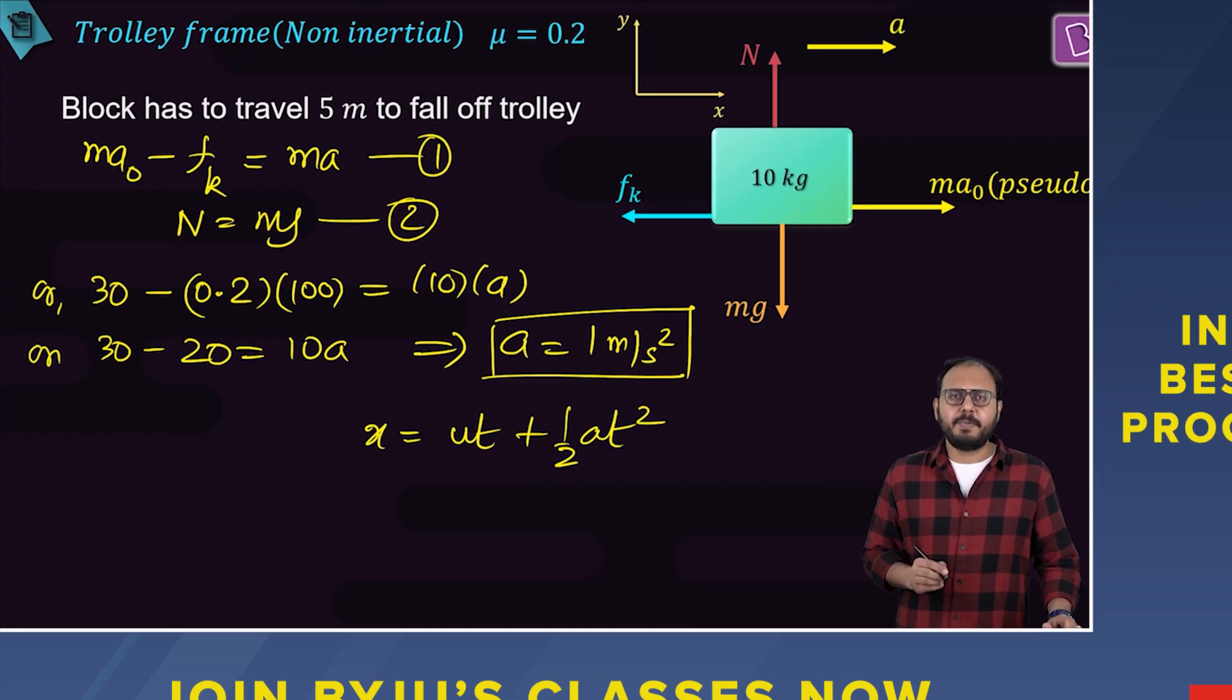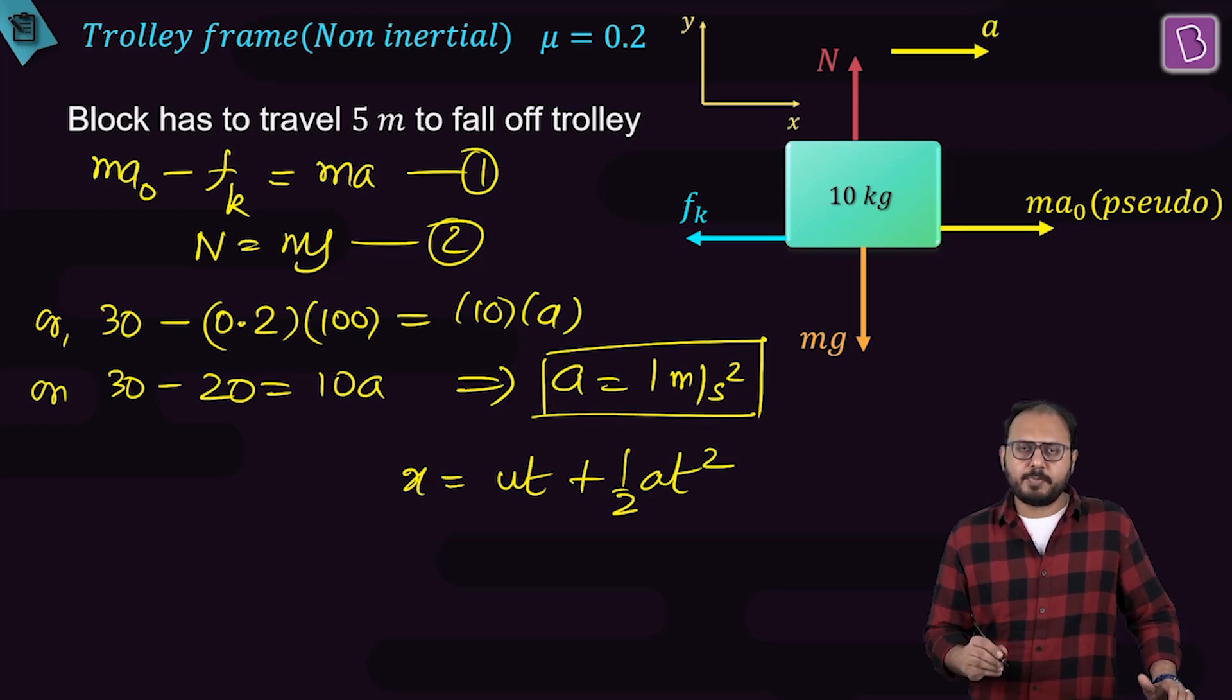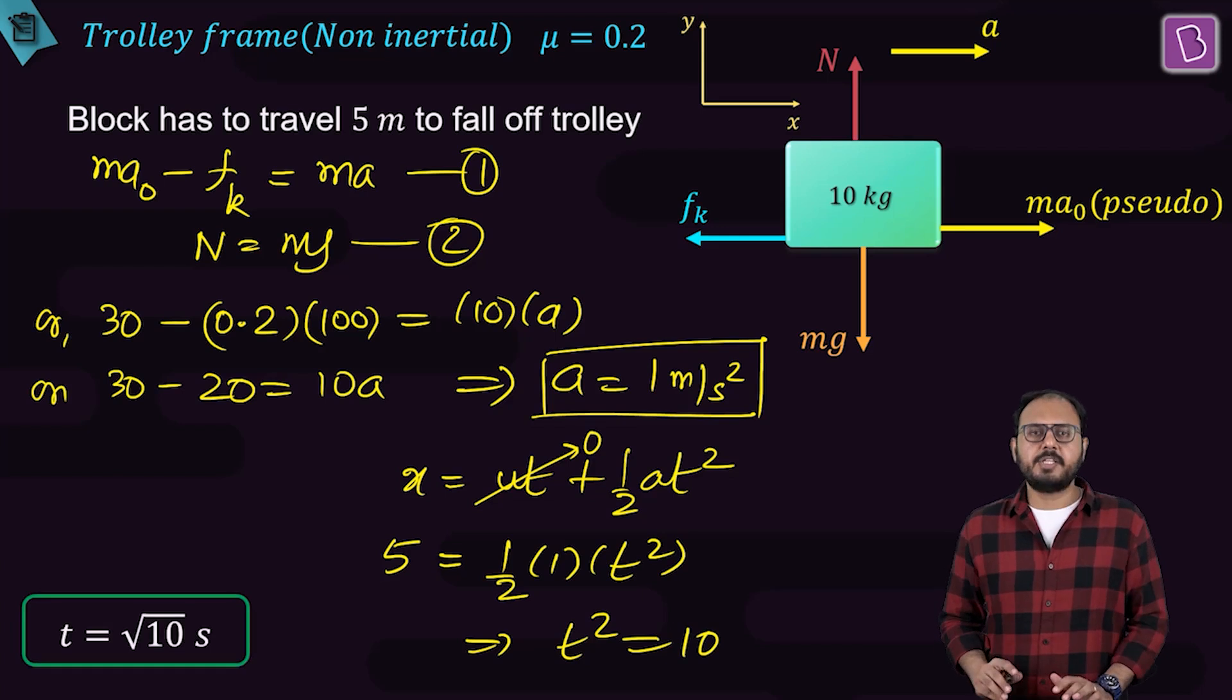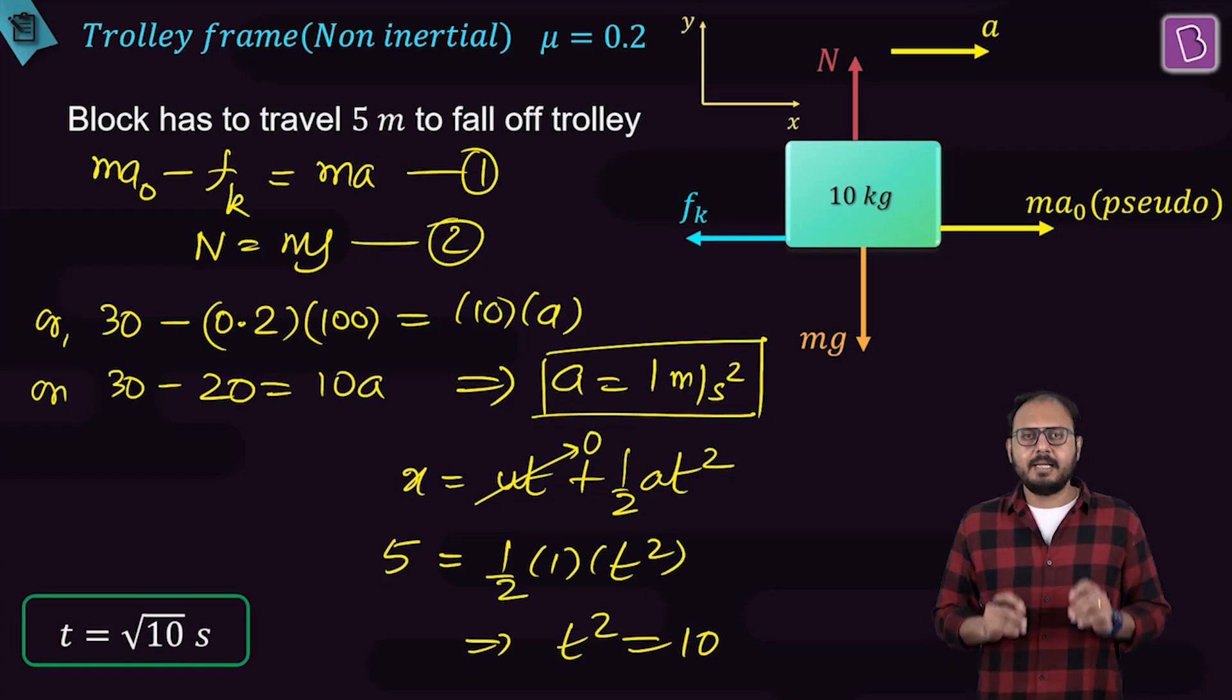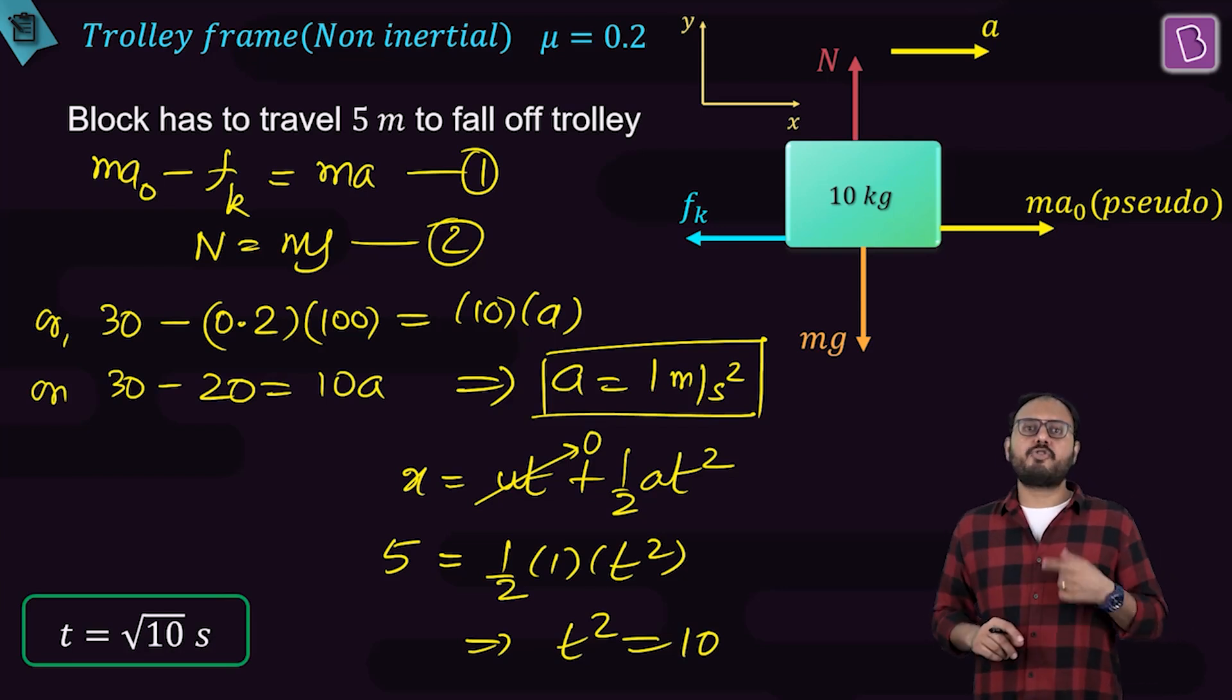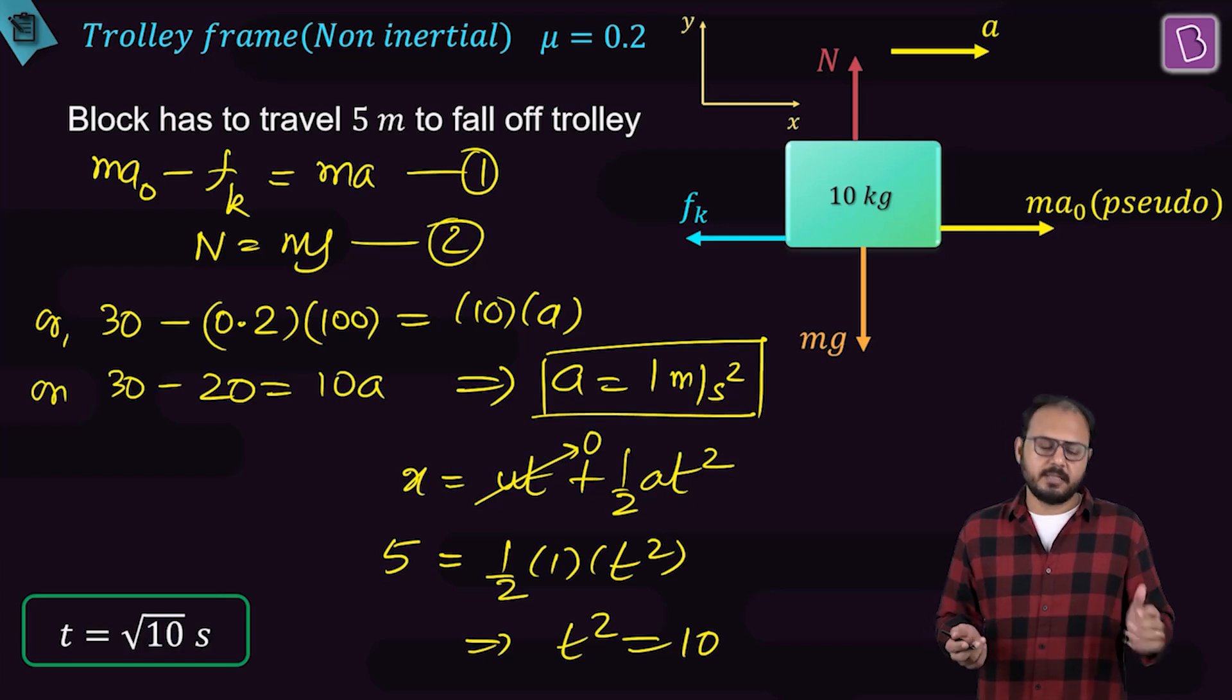Yes. That means in the trolley frame, how much block has to travel? 5 meters. The displacement is 5. Initial speed is 0 because everything was addressed to begin with. Half, acceleration is 1, and t square. That implies t square is equal to 10, and t is equal to root 10 seconds. It means the block starts slipping, slips for 5 meters and loses contact with the trolley in root 10 seconds. And you need to find out how much should the trolley traveled in this root 10 seconds?